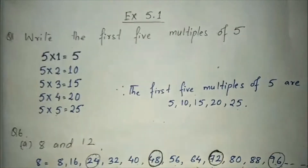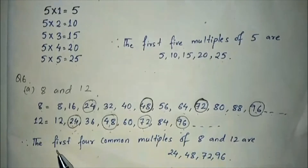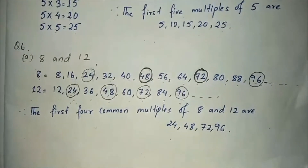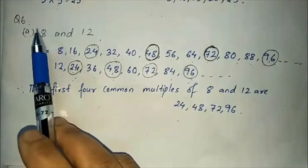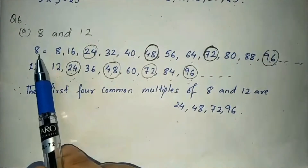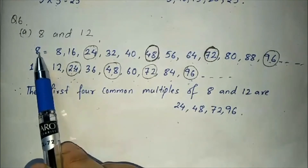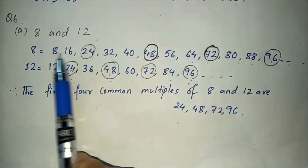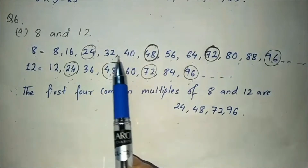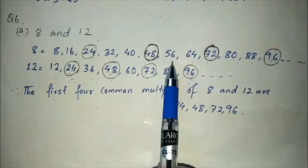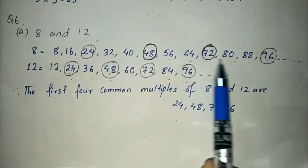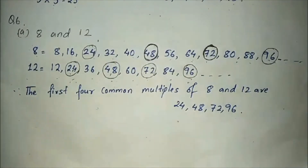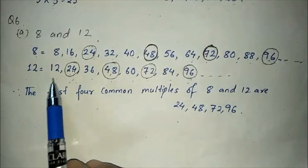Now let us see question number 6: Write the first four common multiples of both 8 and 12. Multiples of 8 are: 8, 16, 24, 32, 40, 48, 56, 64, 72, 80, 88, 96 and so on.